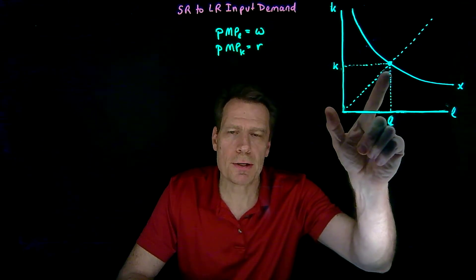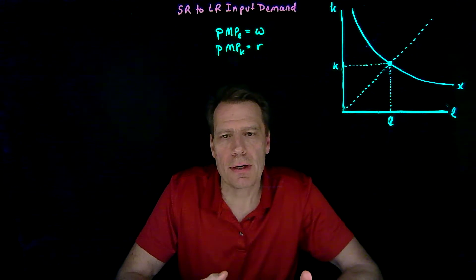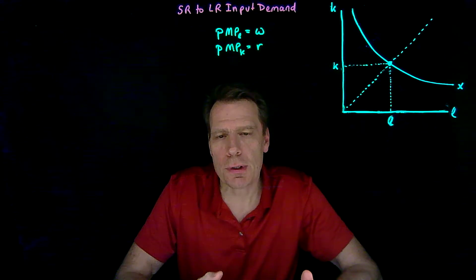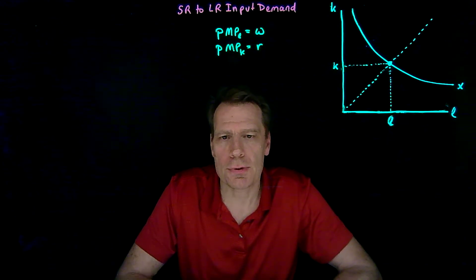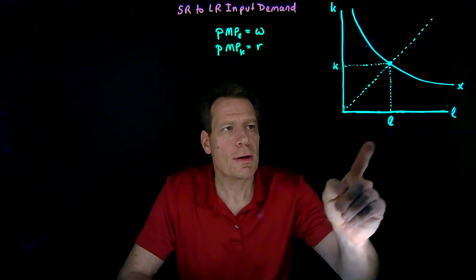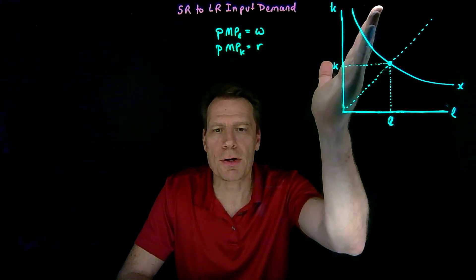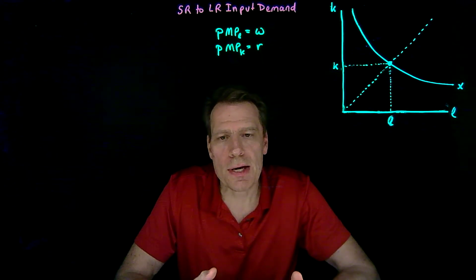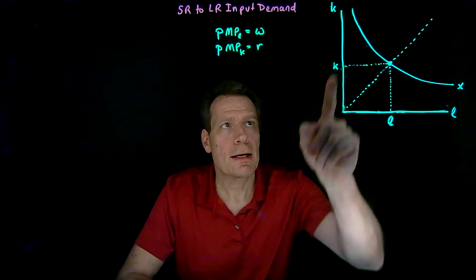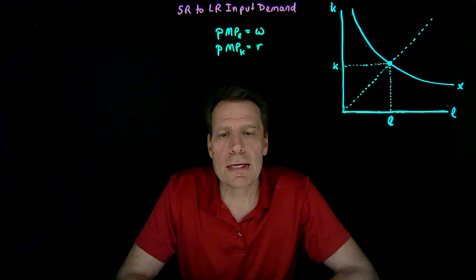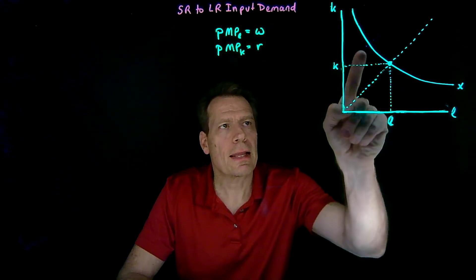If we start with a profit-maximizing production plan where these two equations hold, we've shown where in this graph the substitution and scale effects are going to move us in the long run as input prices change — as the wage or the rental rate either rises or falls. When the wage increases, we want to substitute away from labor and towards capital, putting us on a steeper cost-minimizing path. But an increase in the wage will also increase marginal costs, causing us to want to produce less than this isoquant. So an increase in the wage will cause the firm to choose a new production plan that lies somewhere in this region.